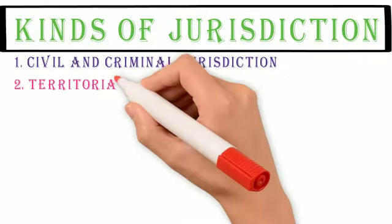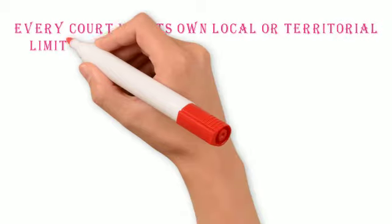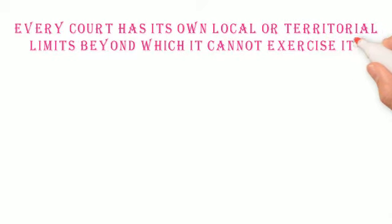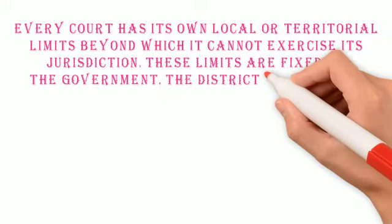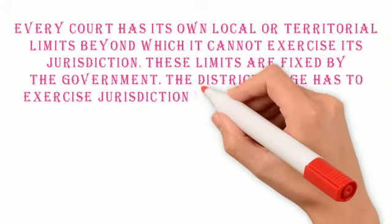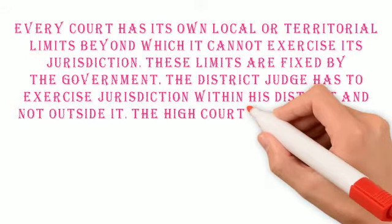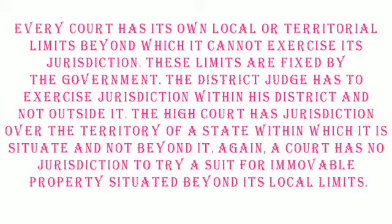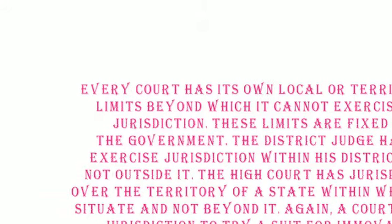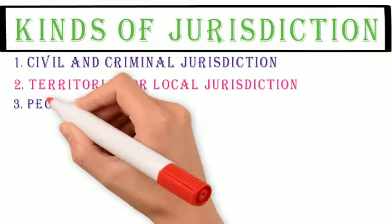2. Territorial or Local Jurisdiction: Every court has its own local or territorial limits beyond which it cannot exercise its jurisdiction. These limits are fixed by the government. The district judge has to exercise jurisdiction within a district and not outside it. The High Court has jurisdiction over the territory of a state within which it is situated and not beyond it. A court has no jurisdiction to try a suit for immovable property situated beyond its local limits.